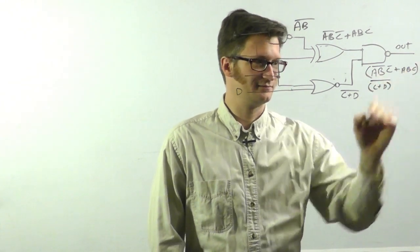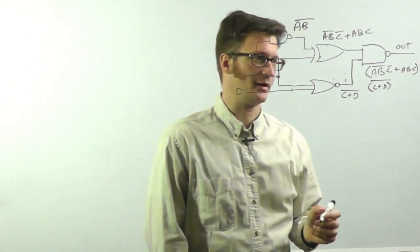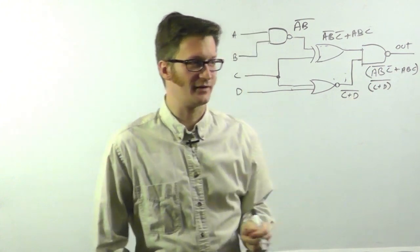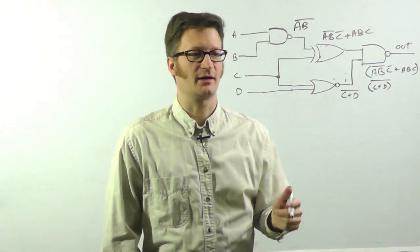So we have AB bar C bar or ABC ended with C or D bar. This is continued on down to the bottom line. And so this is kind of a confusing thing and then you have to do a lot of simplification on it.